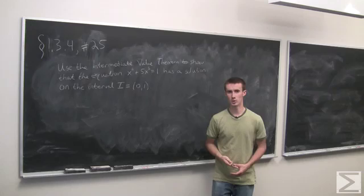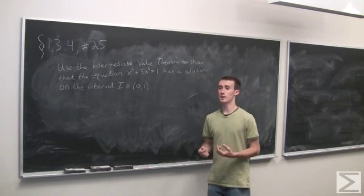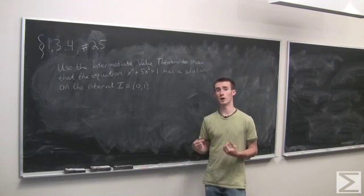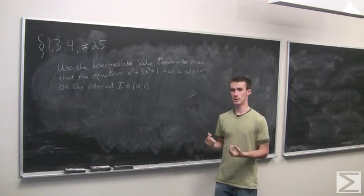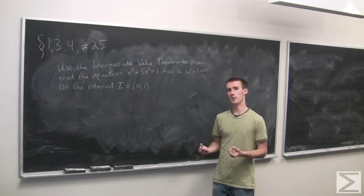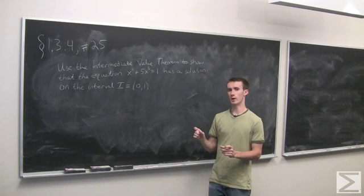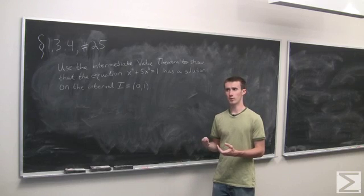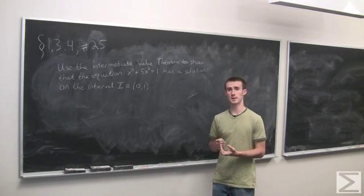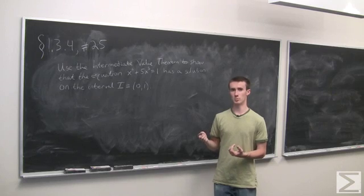Recall that the intermediate value theorem says that given a continuous function on an interval, take any two points in that interval and look at their output values. The theorem says that the function has to hit all the values between those two points.